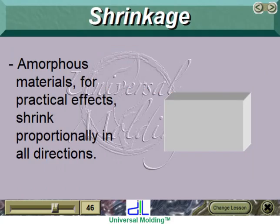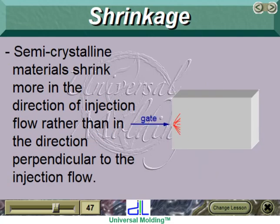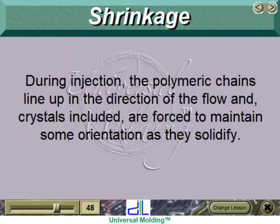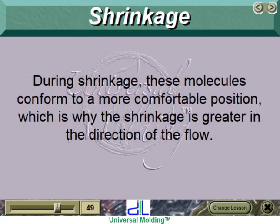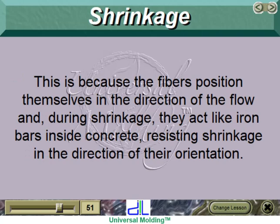Shrinkage: amorphous materials for practical effects shrink proportionally in all directions. Semicrystalline materials shrink more in the direction of injection flow rather than in the direction perpendicular to the injection flow. During injection, the polymeric chains line up in the direction of flow and crystals are forced to maintain some orientation as they solidify. During shrinkage, these molecules conform to a more comfortable position, which is why shrinkage is greater in the direction of flow. When a semicrystalline is reinforced with fiberglass, its shrinkage becomes inverse — less in the direction of injection flow and more in the perpendicular direction — because the fibers position themselves in the direction of flow and, during shrinkage, act like iron bars inside concrete, resisting shrinkage in the direction of their orientation.